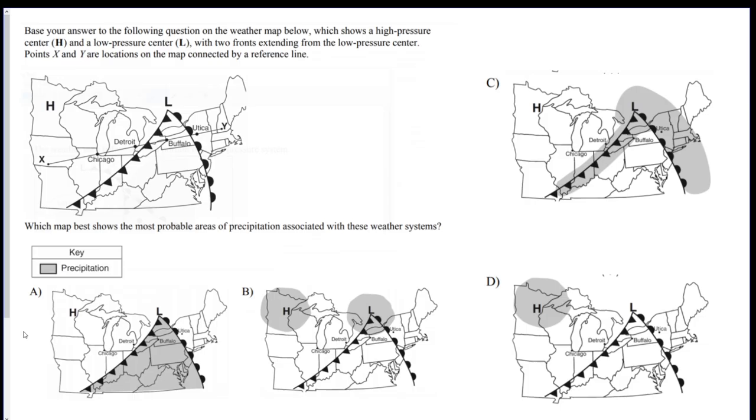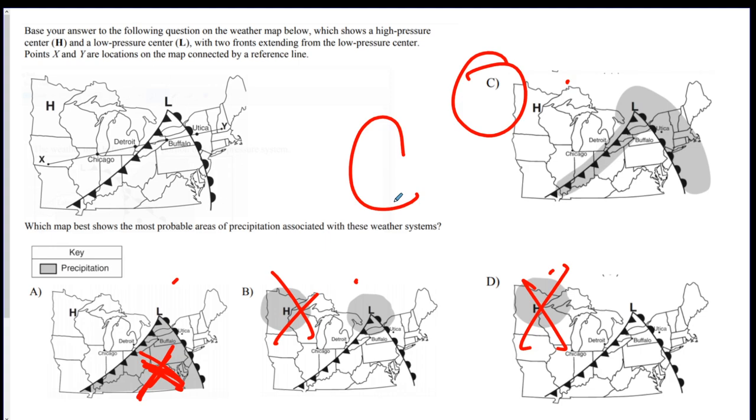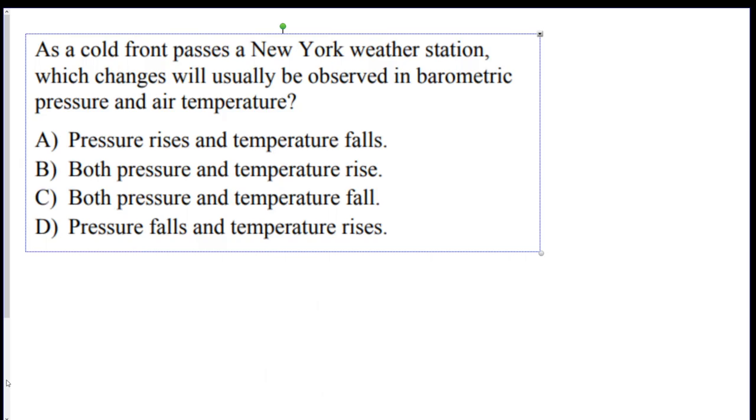Alright, 15. Which map best shows the most probable areas of precipitation associated with these weather systems? So they've got an H and an L. And you've got A, B, C, or D. First of all, you should remember high pressure never has precipitation. So the D is out and B is out. So now you've got to remember where is the precipitation on the mid-latitude cyclones. Remember, three spots. On the cold front, ahead of the warm front, and around the low. We said in the tent is not going to rain. So this one's out. So C is your best answer.